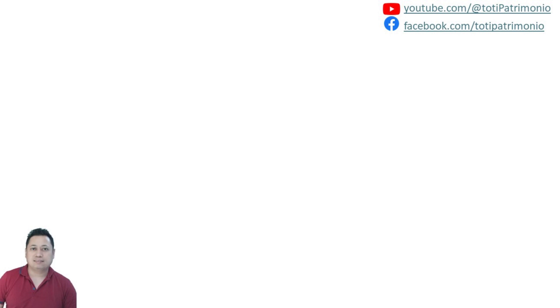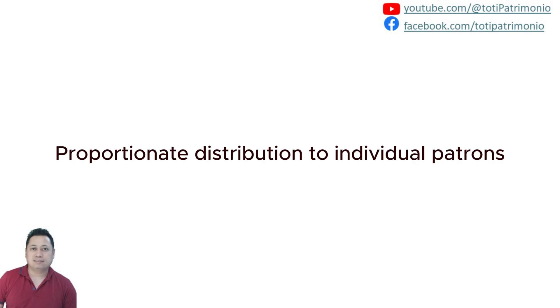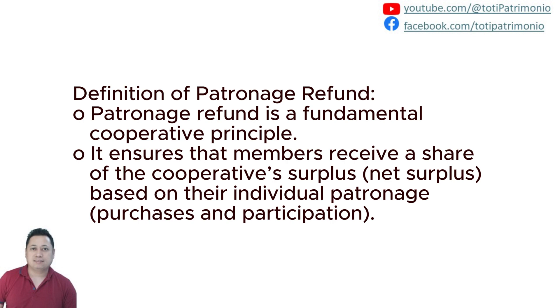The guidelines for the allocation and distribution of patronage refunds: for proportionate distribution to individual patrons, when allocating patronage refunds to cooperative members, it should be proportionate distribution based on individual patronage, and it should also be equitably shared among members.